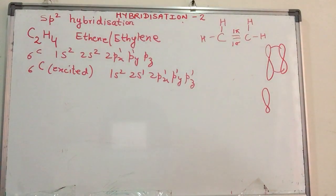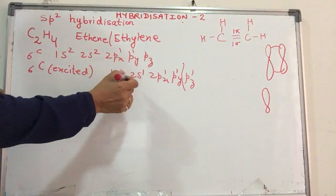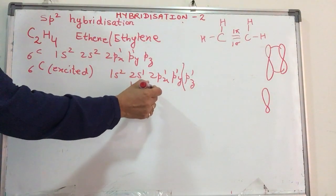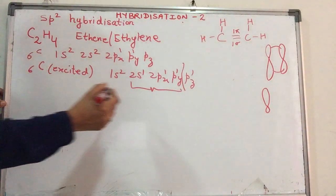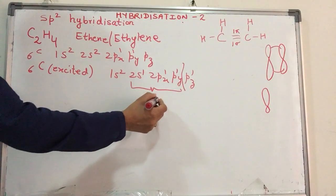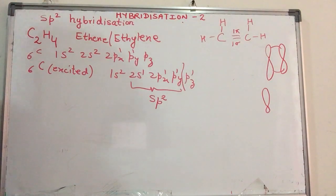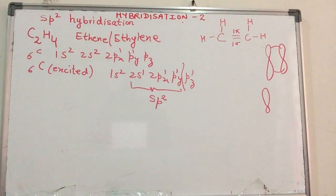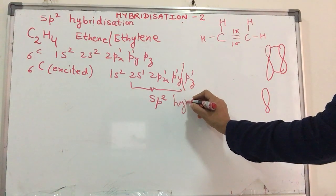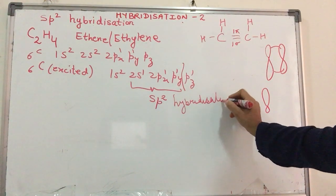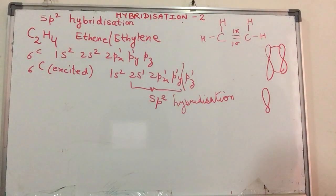Now they have to come together. So one p orbital is left untouched. What is taking part in hybridization is just 1s and 2p orbitals. So what name can we give to these hybrid orbitals? sp2 hybrid orbitals. The kind of hybridization is called as sp2 hybridization. So in the case of ethene or ethylene, there is sp2 hybridization.